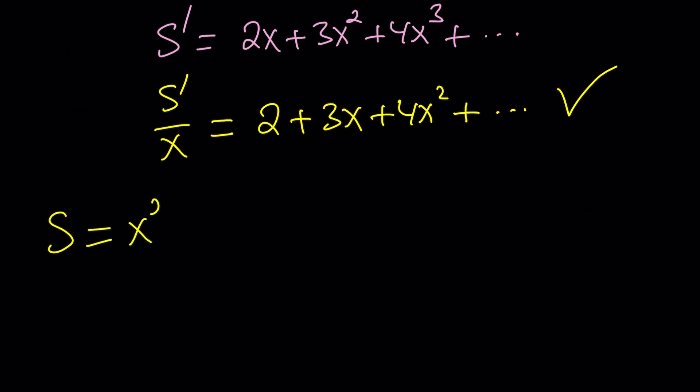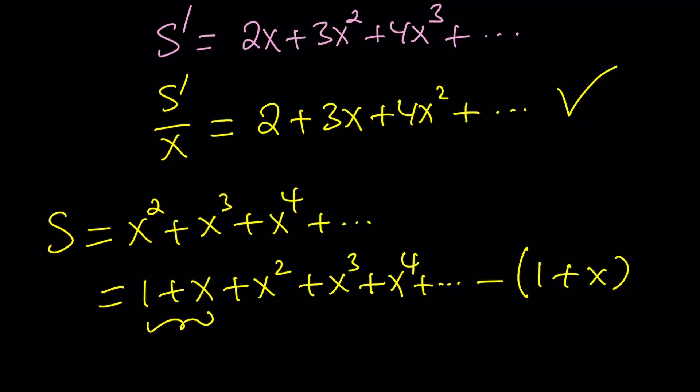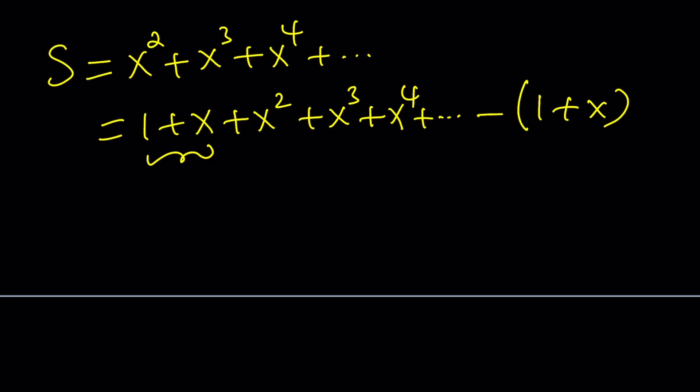So we're going to go ahead and evaluate S first. So what is S? S is x squared plus x cubed plus x to the 4th. Looks like this is missing some terms, isn't it? So if we had the whole thing, it would look like this: 1 plus x plus x squared plus x cubed plus x to the 4th. But notice that the first two terms are missing, so I need to subtract them. In other words, from this infinite geometric series, if you subtract 1 plus x as a quantity, then you'll end up with S.